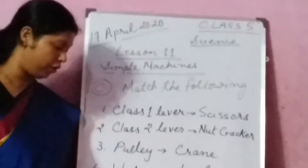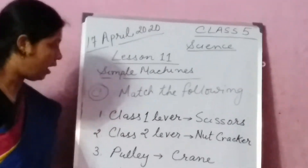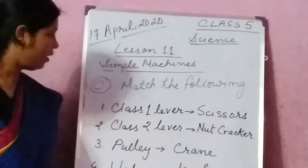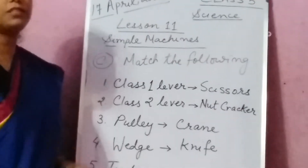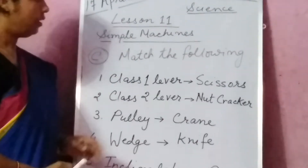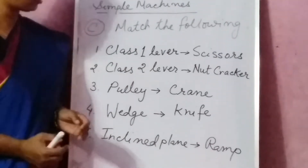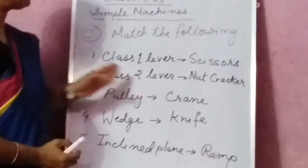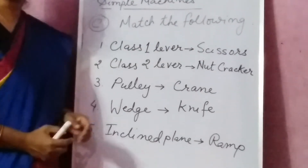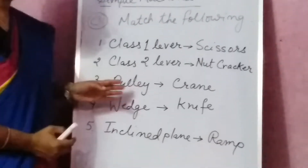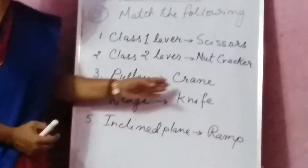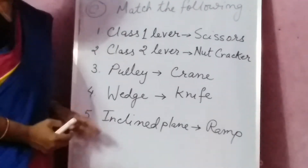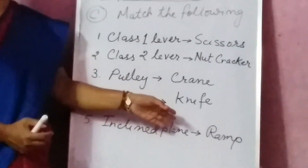Now we are going to do exercise C, that is match the following. We are adding the examples: class 1 lever — scissors; class 2 lever — nutcracker; pulley — crane; wedge — knife; inclined plane — ramp.